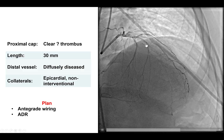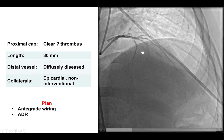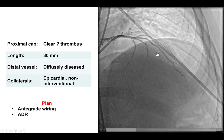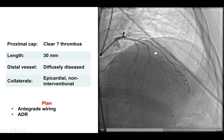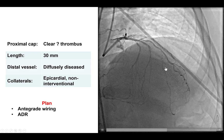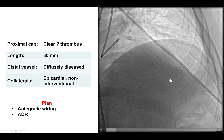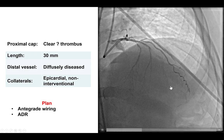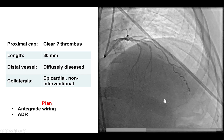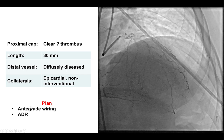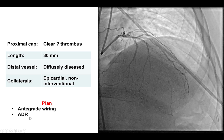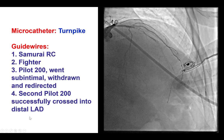There is a well-defined proximal cap. There is a filling defect, suggesting that this may not be a CTO but actually an acute occlusion. The length of the in-stent occlusion is about 30 mm. The distal vessel is diffusely diseased but is filling through ipsilateral collaterals. However, those collaterals do not seem to be appropriate for the retrograde approach. Therefore, the plan was to attempt antegrade wiring followed by antegrade dissection re-entry.